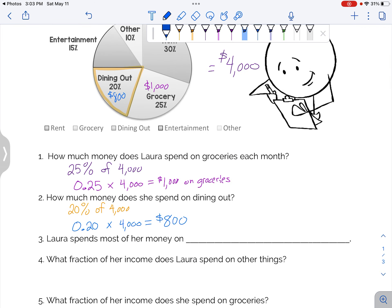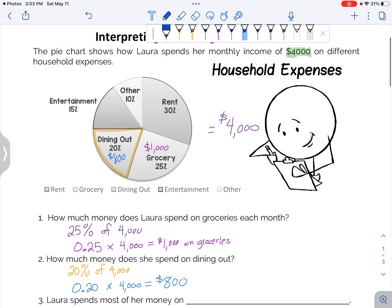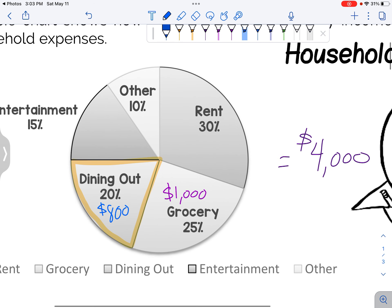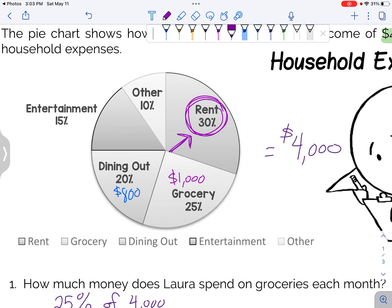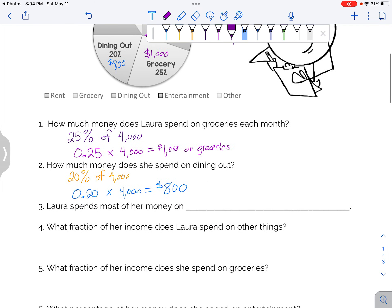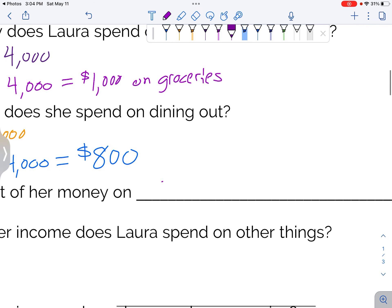Laura spends most of her money on, well, without even figuring out the exact amount of money, we can see that rent is 30%, and that's the biggest percent. So I don't know how much money it is yet, but I know that it's going to be the most. On rent.